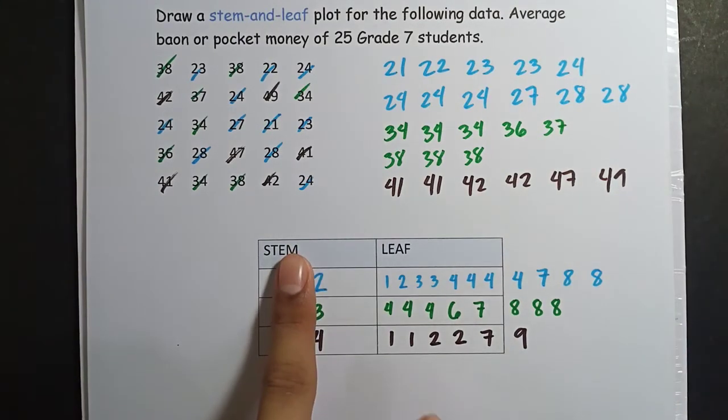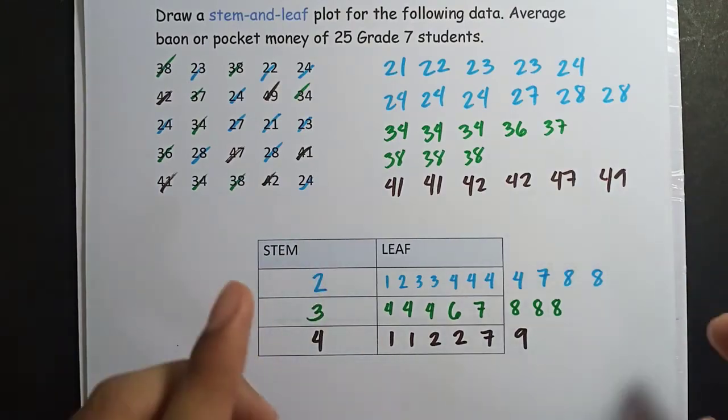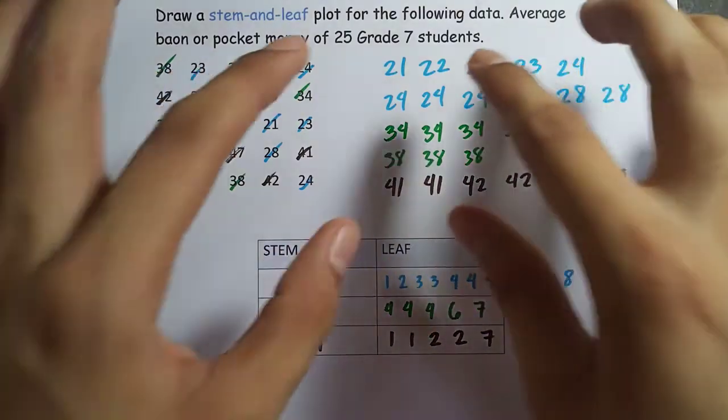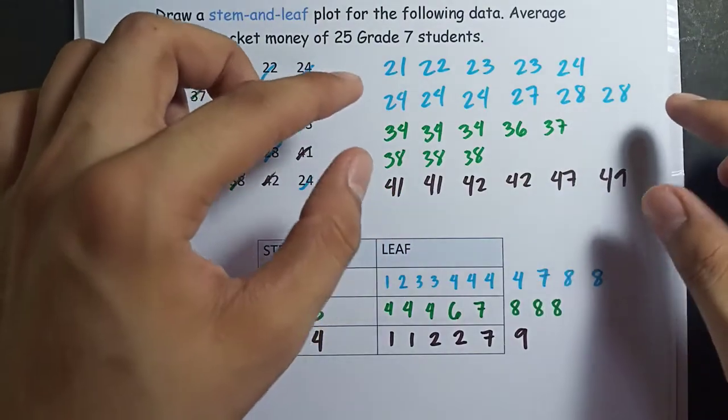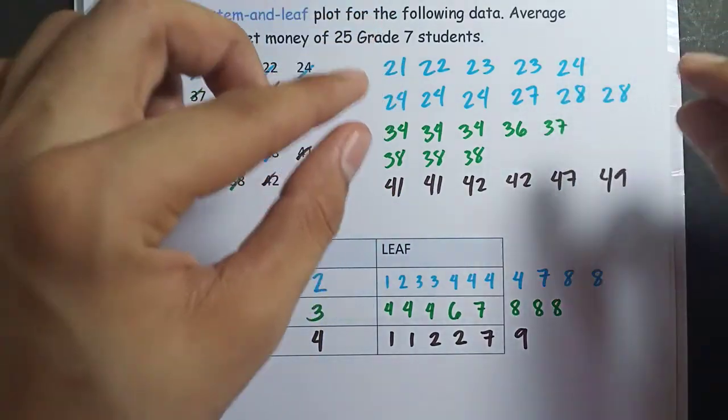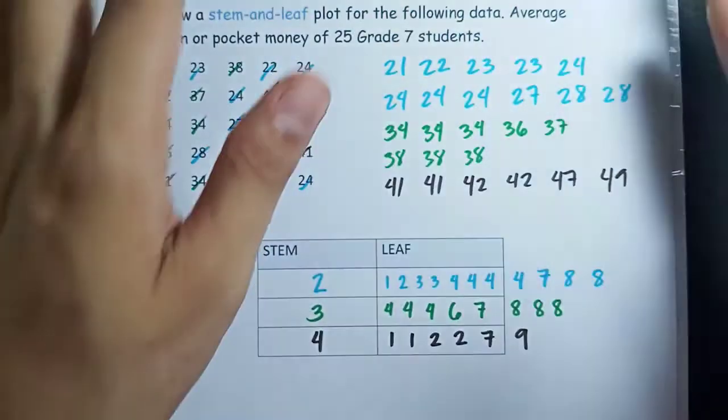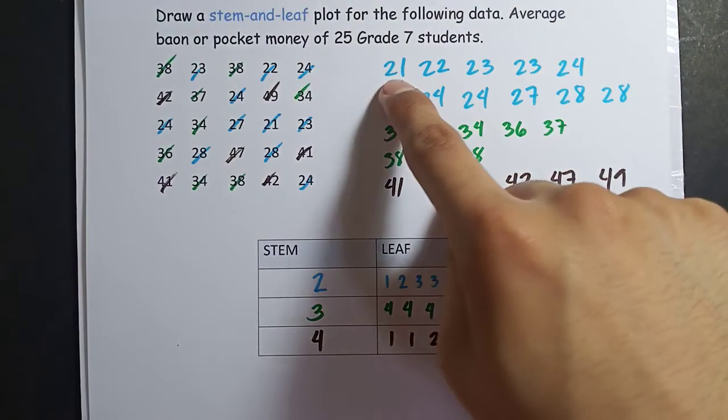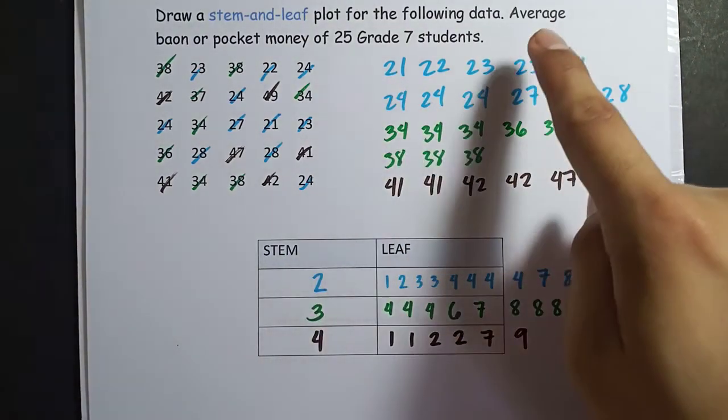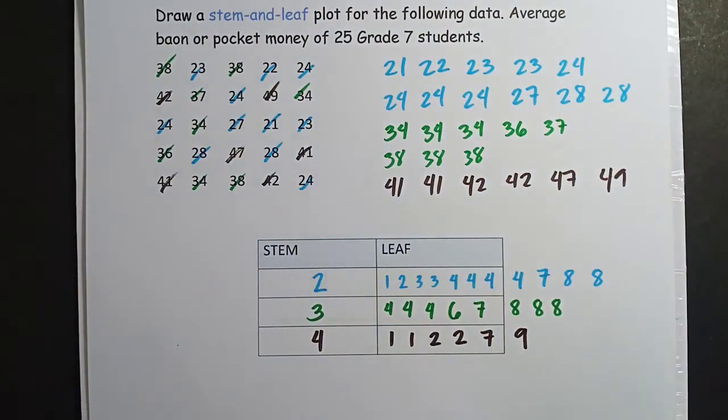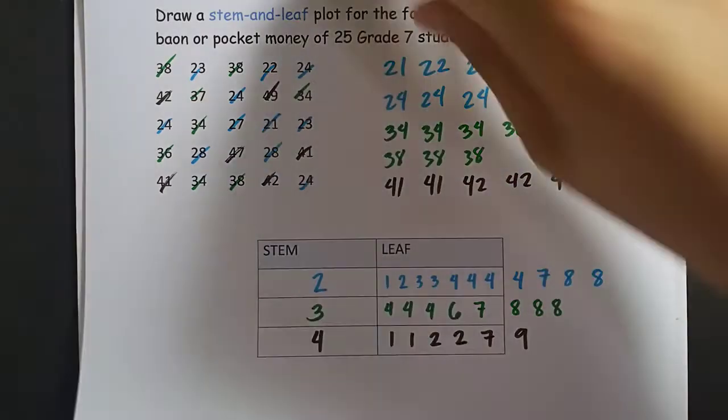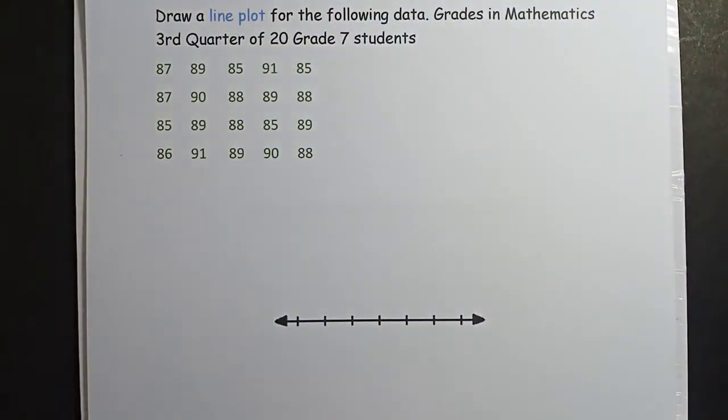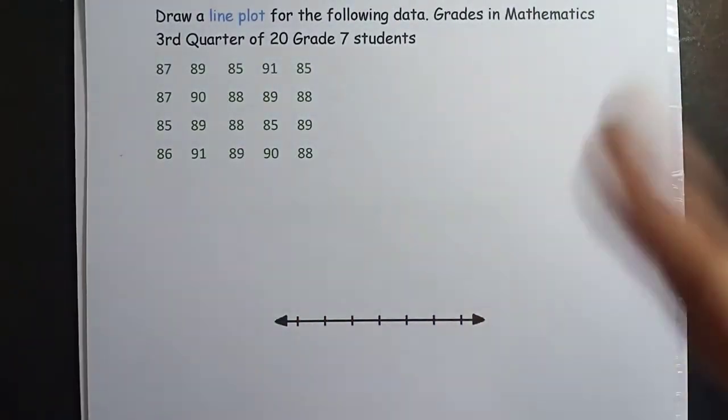Stem contains the tens value, leaf contains the ones. How to do it? We start by sorting the data. Arrange them, group them by tens. Arrange them by tens. Then the tens value goes in the stem, the ones value goes in the leaf. Next, we have the line plot. I'll skip arranging the data to keep the video shorter. I will arrange it, let me pause.